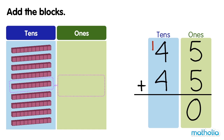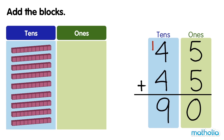Now we add the tens. 1 ten plus 4 tens plus 4 tens equals 9 tens. There are 90 blocks. 45 plus 45 equals 90.